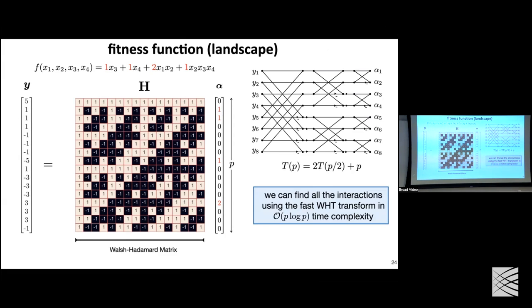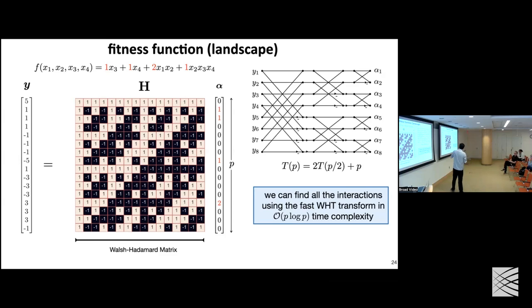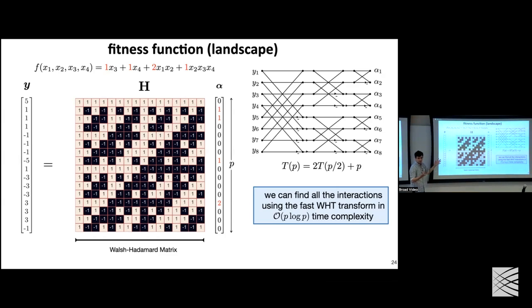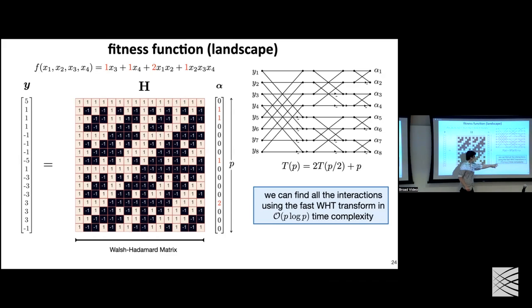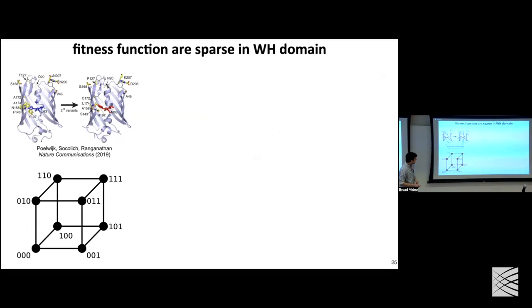There are studies in biology where people have found epistatic interactions for small numbers of mutations on proteins by creating the full combinatorial space. But most commonly the number of mutations we want to study is much larger, so p grows exponentially with d. Even O(p log p) time complexity becomes too much, and we can't do p many experiments. Most of this talk addresses how we handle these high-dimensional problems with only a few experiments.